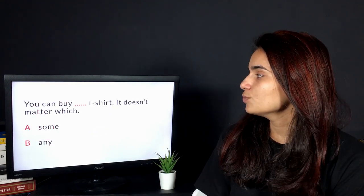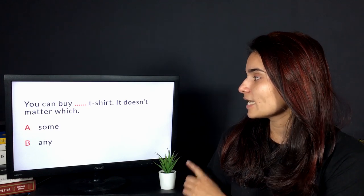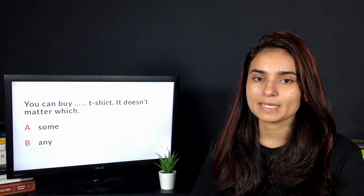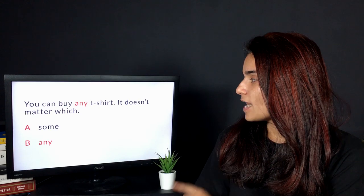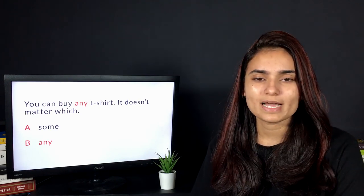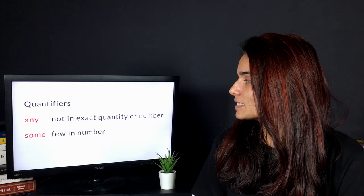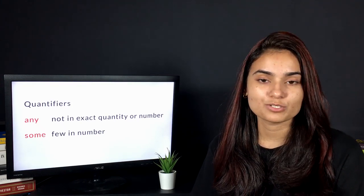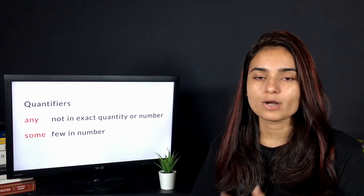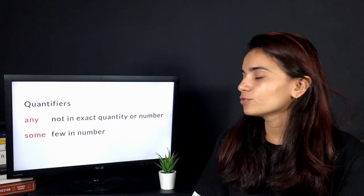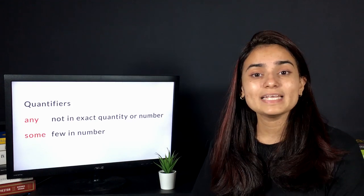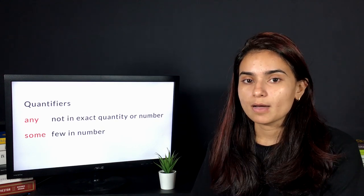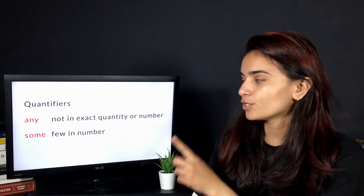Next question: You can buy dash t-shirt, it doesn't matter which. Think of the answer from the options: A is some, B is any. The correct answer is 'you can buy any t-shirt, it doesn't matter which.' The concept behind this is quantifiers—any and some. Any is used when you don't have an exact quantity or number. You use some when you have an understanding that something is few in number or less in quantity.